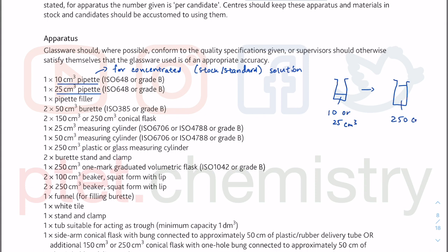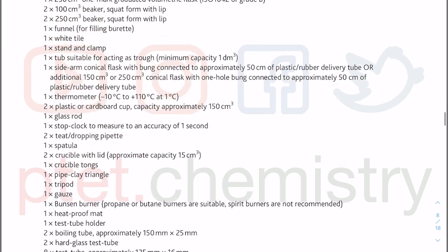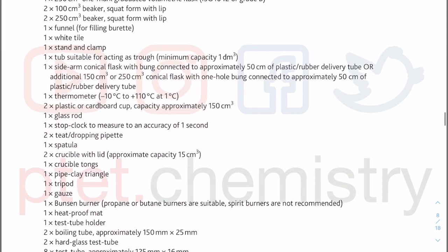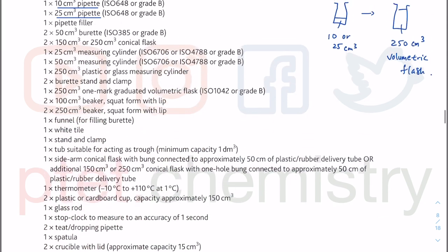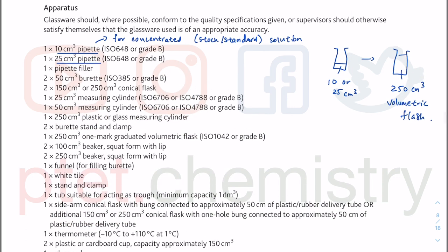You then make it up to 250 cm³, which is more likely given the apparatus listed in the syllabus. Looking further down, I'm looking for the volumetric flask. I was surprised they don't initially mention it, but yes — here it is: the 250 cm³ volumetric flask, which is stated in the syllabus.